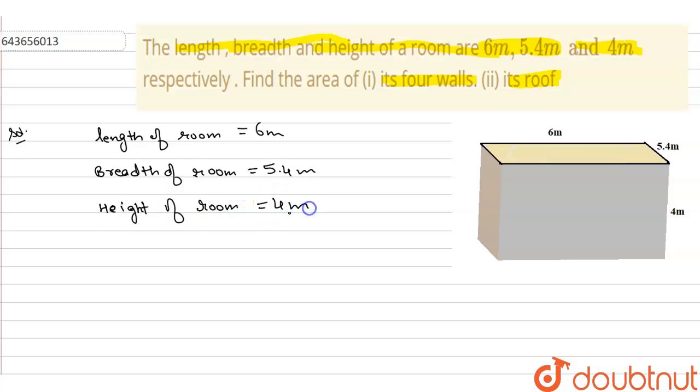And we have to find the area of its four walls. Area of four walls of room means curved surface area. Curved surface area of cuboid.